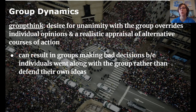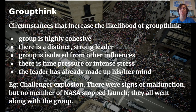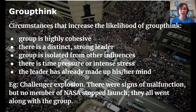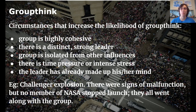There are several circumstances that make groupthink more likely. First, if the group is highly cohesive with a strong bond, the desire to go against the team is lessened. Second, if there's a distinct, forceful leader, people want to go along with them. Third, if the group is isolated from outside influence, it's harder for individuals to dissent. Fourth, stress or time pressure makes people avoid slowing things down with objections. Finally, if the leader has already made a decision, each person in the group is much less likely to raise an objection.